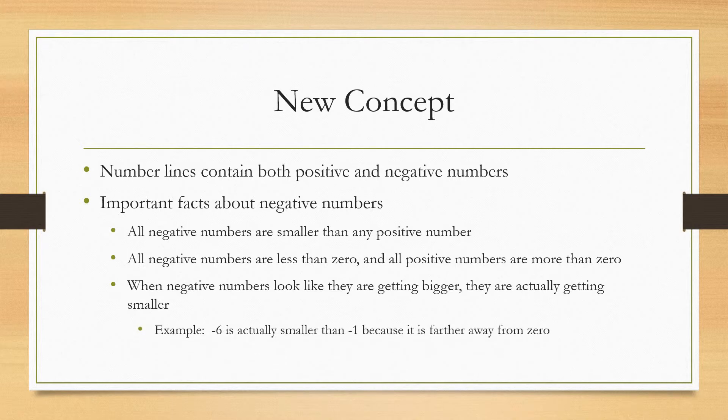Negative six is actually smaller than negative one because the farther you get away from zero on the negative side of the number line, the smaller the numbers get. And negative six is farther away from zero than negative one, so negative six is smaller.